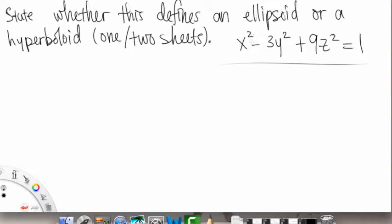So first of all, let's look at the equation that we're given, the formula here. We see that we have a positive x, a negative y term, and a positive z term, and then a 1 on the right side.